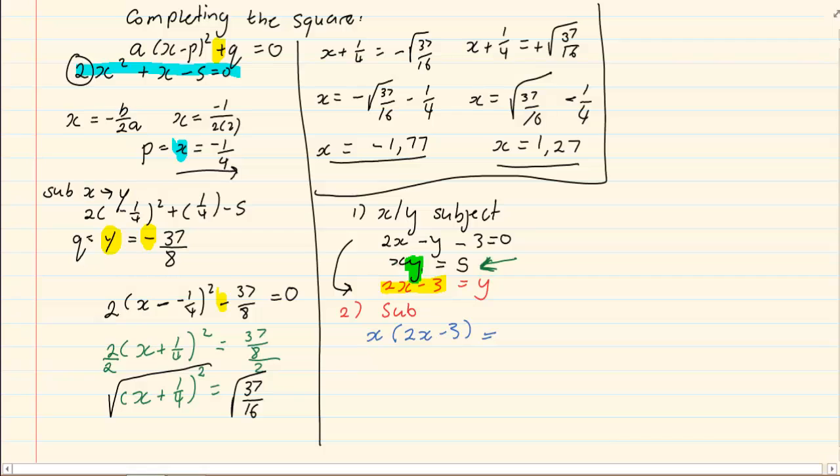So, I have x into 2x minus 3 is equal to 5. Next, we simplify.